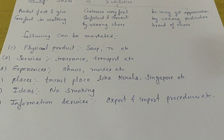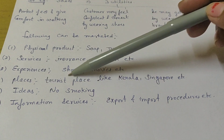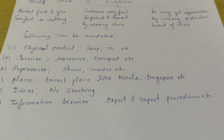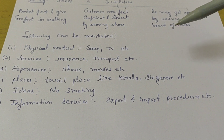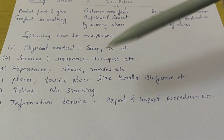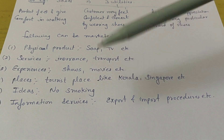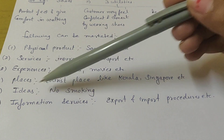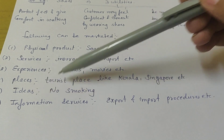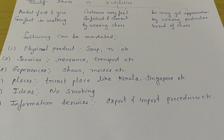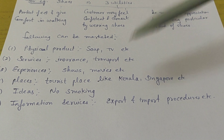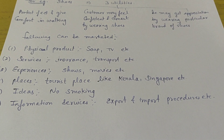Fourth is places — tourist places like Kerala and Singapore. You also see advertisements for them on TV, like Kerala tourism ads. Fifth is ideas — ideas can also be marketed. For example, 'No Smoking' is also an advertisement. When you see movies, there is a smoking-related advertisement shown first.